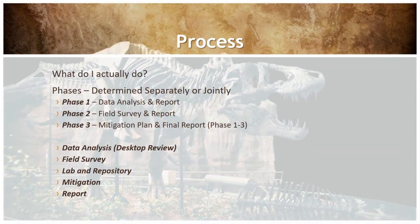The process of locating and surveying for fossil material is very similar in many ways to archaeology. There are three main phases: a data analysis or desktop review, a field survey, and construction mitigation. Each phase can be determined separately or jointly — sometimes the data analysis or field survey may have been completed days, weeks, or even years before, and we still need to complete the construction mitigation phase. Whichever phase fits a project, we can do it here at KLJ, and each phase is concluded with a report.